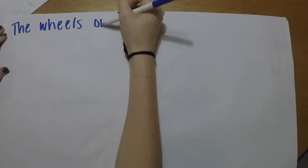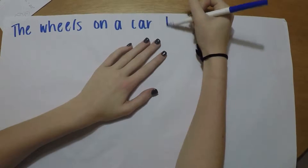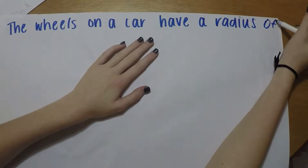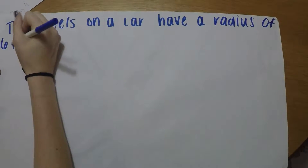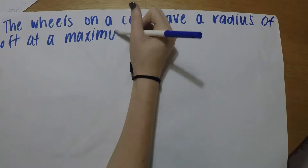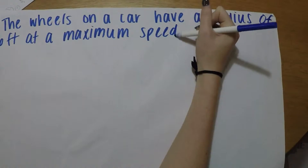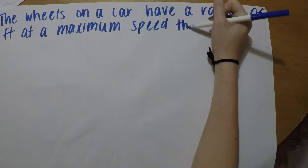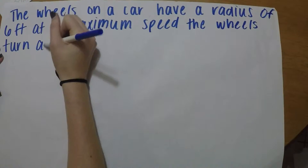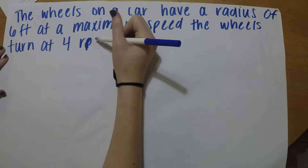In this video we'll be solving a linear and angular velocity problem. The wheels on a car have a radius of six feet, and at maximum speed the wheels turn at four revolutions per minute.